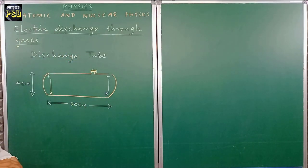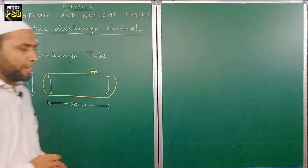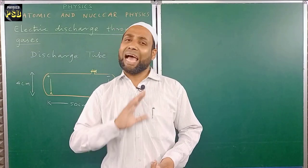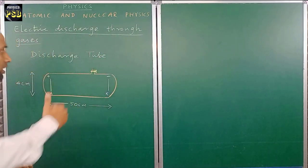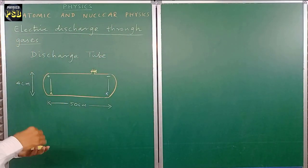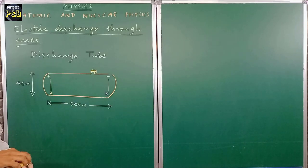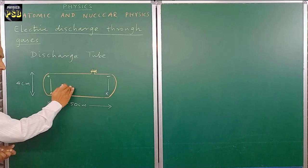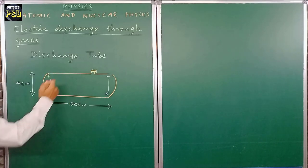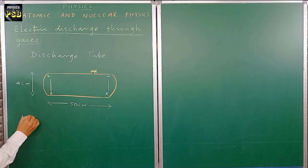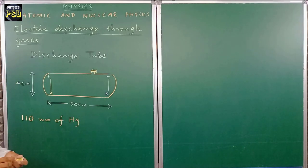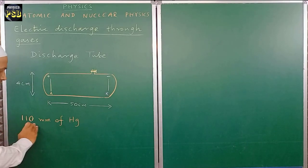Now, how can one make gases conduct current? Gases allow current when they are kept at low pressure. At normal atmospheric pressure, gases do not allow current to pass through them, whereas when we reduce the pressure to a certain extent, they start conducting electric current. Suppose the discharge tube is filled with some gas and the pressure is reduced to 110 millimeters of mercury — a unit used to measure the pressure of a gas.